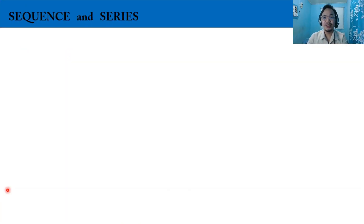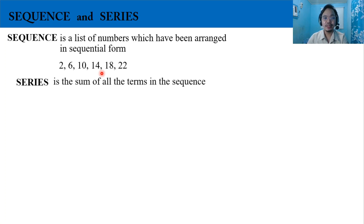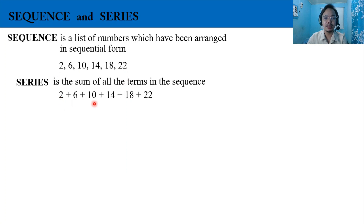In this video, we are going to discuss the sequence and the series. A sequence is a list of numbers which have been arranged in sequential form. For example: 2, 6, 10, 14, 18, and 22. While the series is the sum of all the terms in the sequence. So if this is our sequence, its series form is 2 plus 6 plus 10 plus 14 plus 18 plus 22. This is the difference between the sequence and the series.